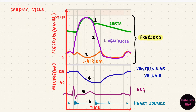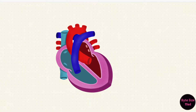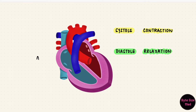At the top of the picture are the three pressure changes: the aorta, the left ventricle, and the left atrium. Then we have the curve for the ventricular volume change. The electrocardiogram and the heart sounds are usually at the bottom. This is one cardiac cycle, and it can be divided into phases. There's systole, which is the phase of contraction, and diastole, which is the phase of relaxation. They happen both in the atria and in the ventricles.